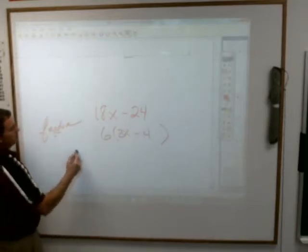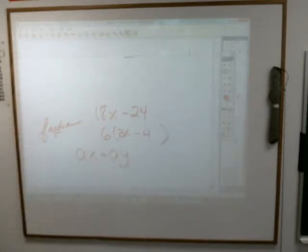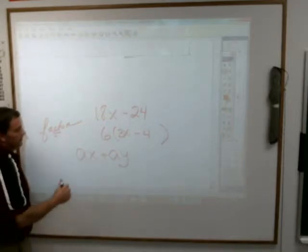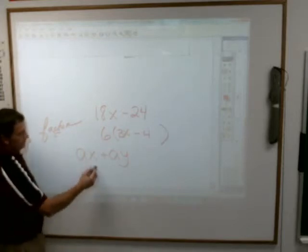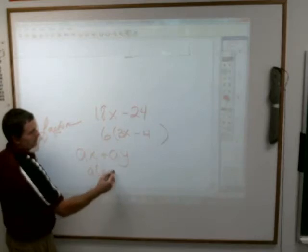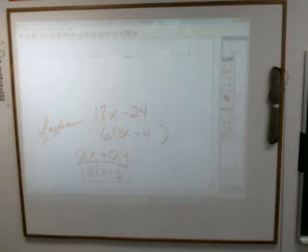Now here's where things get a little crazy. What about this one? ax plus ay. If you are asked to factor that, ax plus ay. If you are asked to factor that, what can you take out of both of them? What do they both have? Michael, what? A. And if you take it out you're left with x there and you're left with y there, so a times x plus y.